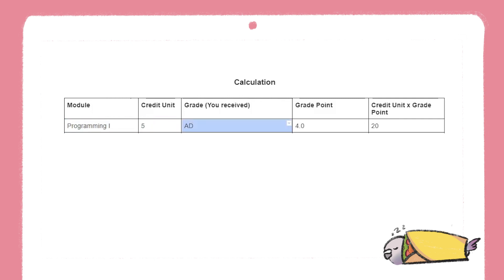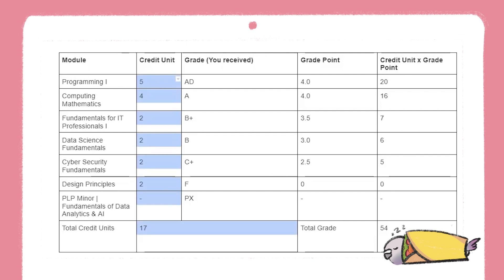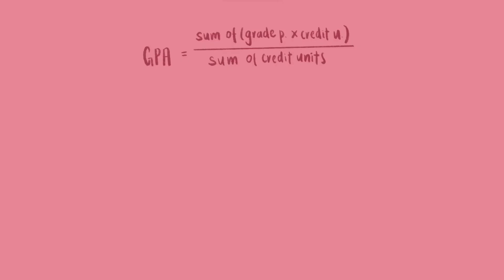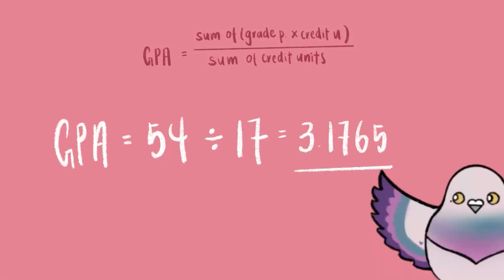So we got an AD for this module, which would equate to a grade point of 4. The credit unit of 5 will then be multiplied with the grade point of 4, to result in 20 for that module. The credit unit times grade points for each module would be added up together, and the system will divide them with the total number of credit units taken in the semester. In this case, the final GPA would be 3.176.